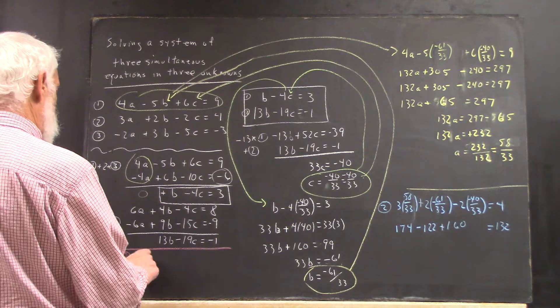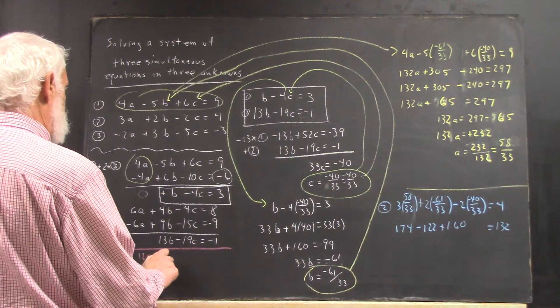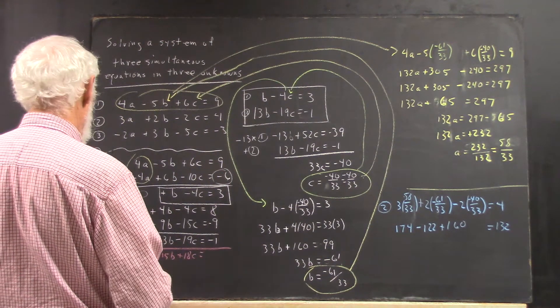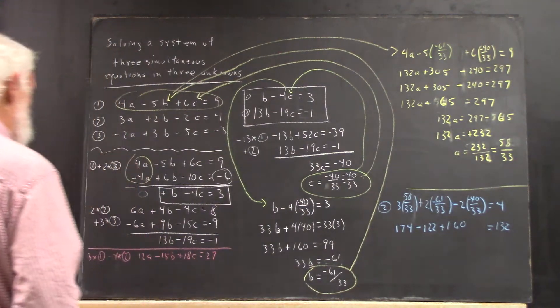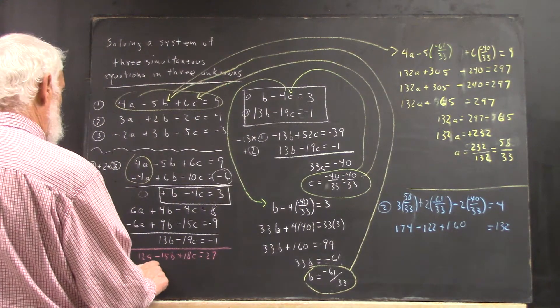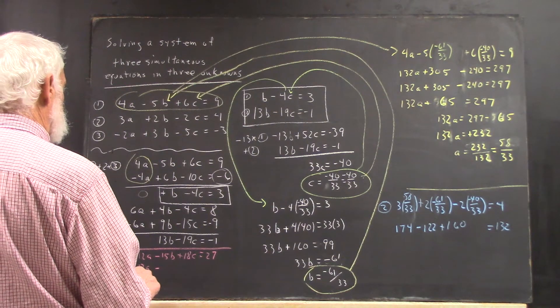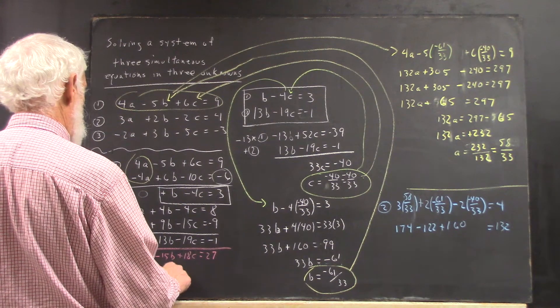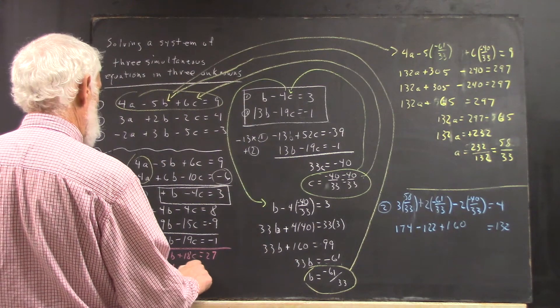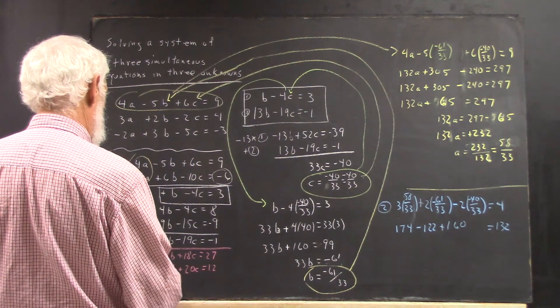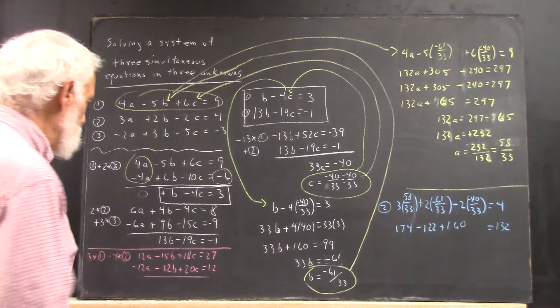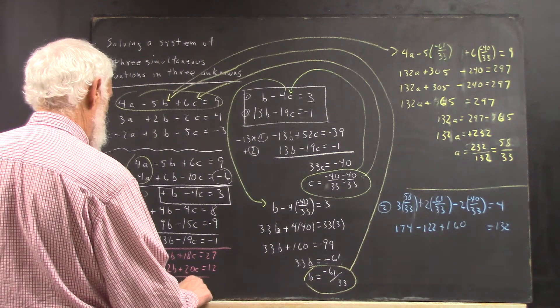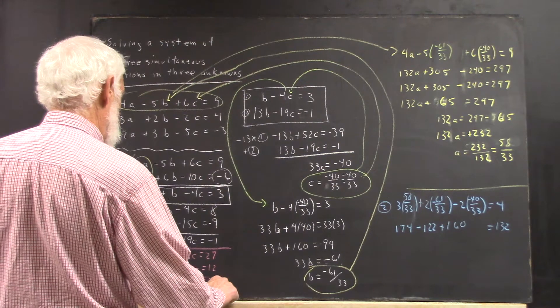And 3 times the first would be 12A minus 15B plus 18C equals 27. And negative 4 times the second would give me negative 12A, or 4 times the second. Plus minus 12B plus 20C equals 12. Hopefully I did that right. The A's go away. I get negative 27B plus 38C equals 39.